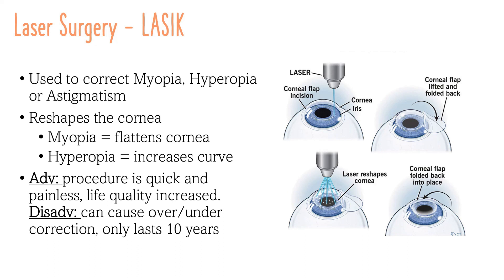Other surgeries can involve implants or lens replacements to correct other disorders. An example of this is cataract surgery, where the cloudy lens is removed and replaced with an artificial lens called an intraocular lens (IOL) to restore clear vision. Lasers have been recently introduced to create incisions and help break up the cataract.